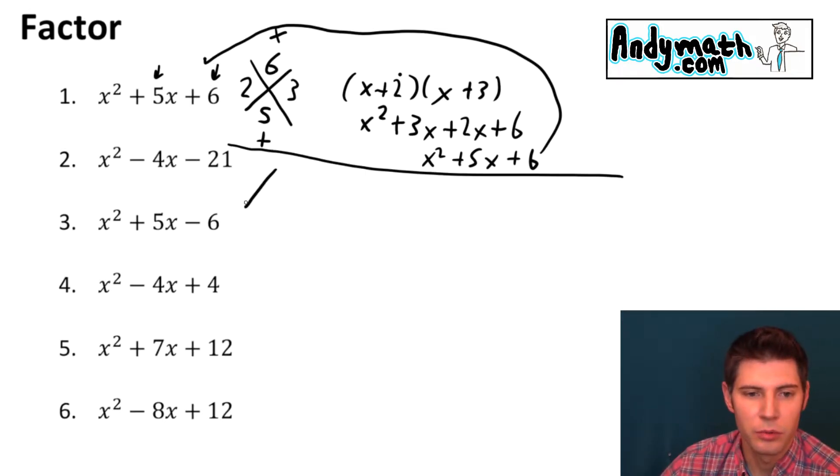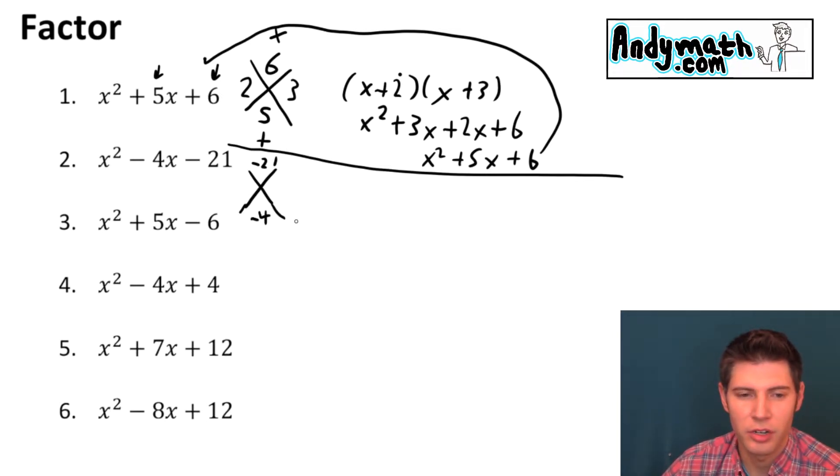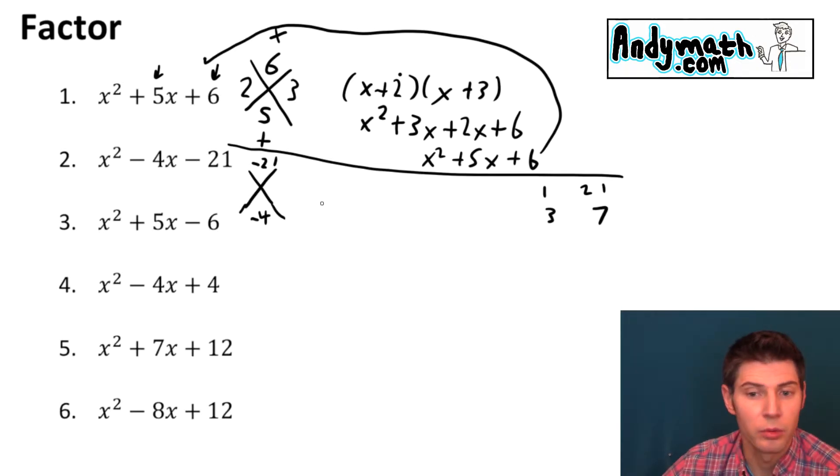So for number two we want two numbers that multiply to negative 21 and add to negative 4. So it's a little bit trickier. Another thing you can do is start making numbers that multiply to 21. So that'd be 1 and 21, 3 and 7. Oh! 3 and 7.